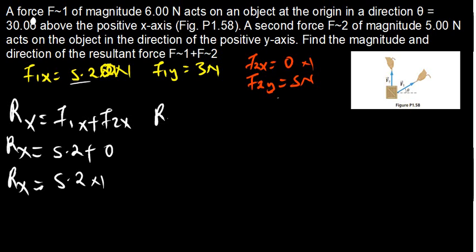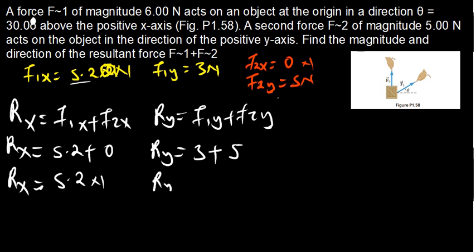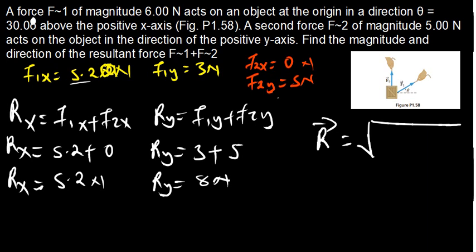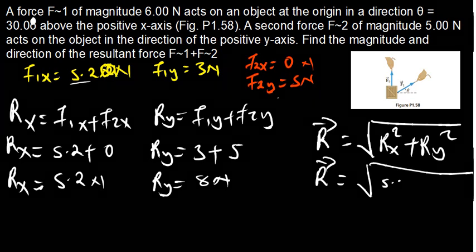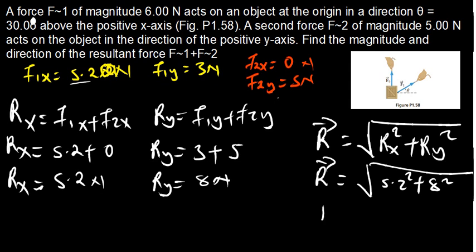To find the magnitude, we use the Pythagorean theorem: the resultant = square root of (Rx squared plus Ry squared). So we have the square root of (5.2 squared plus 8 squared), which gives us the square root of 91.04, and I'm getting 9.54 Newtons. That is the magnitude of the resultant. But we need to find the direction as well.